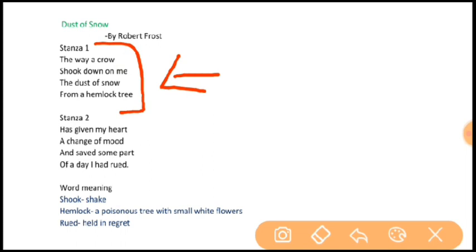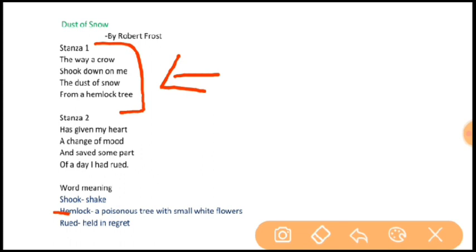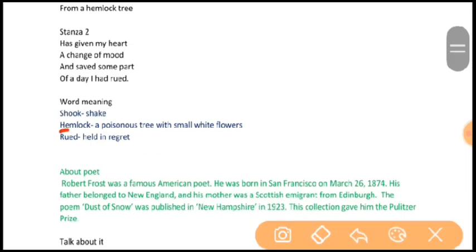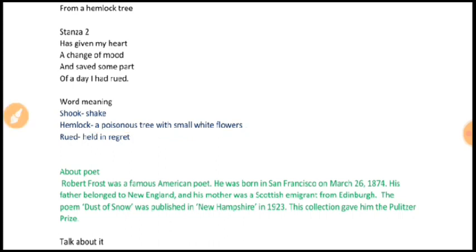The hemlock tree is a poisonous tree with some white flowers. The crow and hemlock tree are both related with negativity — they represent negativity, sorrow, and sadness. But still, the poet has used them in this poem.